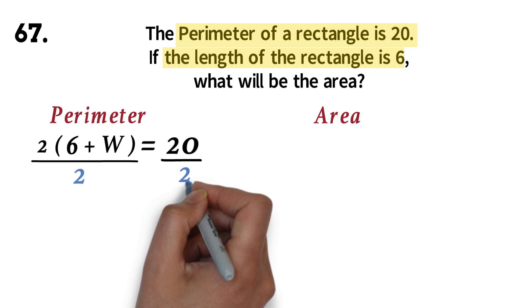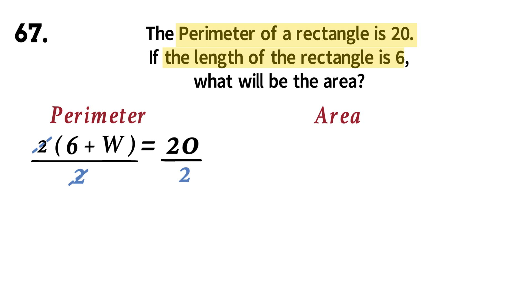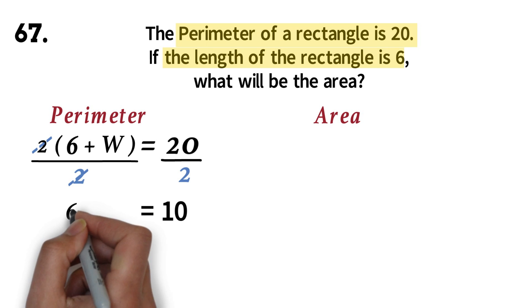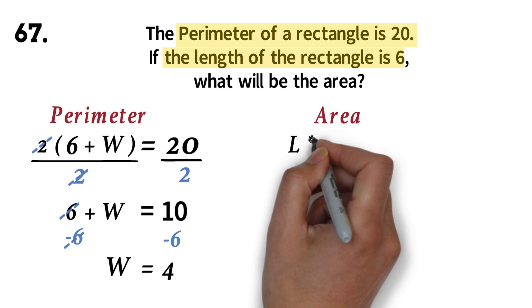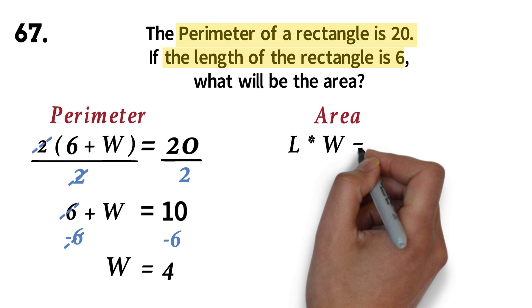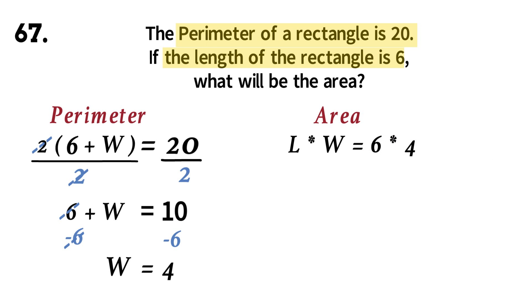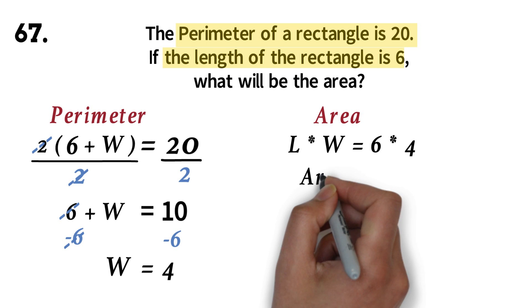Divide both sides by 2. The 2 will cancel out. 20 divided by 2 is 10. Next, we will subtract 6 from both sides. The 6 will cancel out. 10 minus 6 is 4. So the width is 4. Now that we know the length and the width, we can find the area. The area of a rectangle is length times the width. We have area equals 6 times 4. This will give us the area as 24.